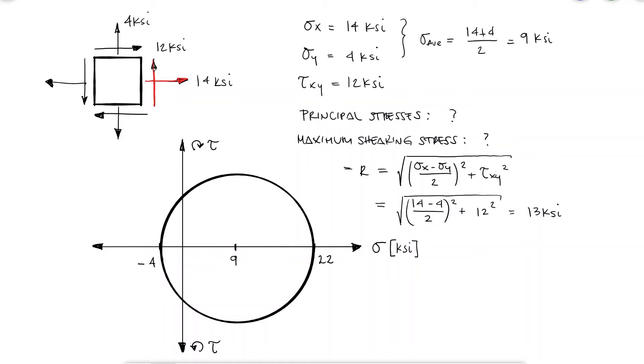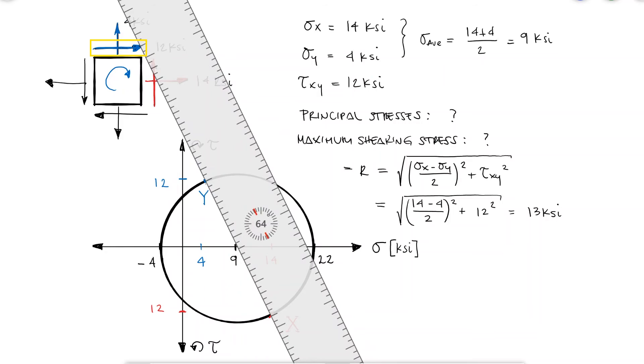Our original stress state for x was located at a sigma of 14 and a tau of 12 that tried to rotate the element counterclockwise, and our original stress for y was found at a positive 4 for sigma and the shearing stress of 12 that wanted to rotate our stress element clockwise.